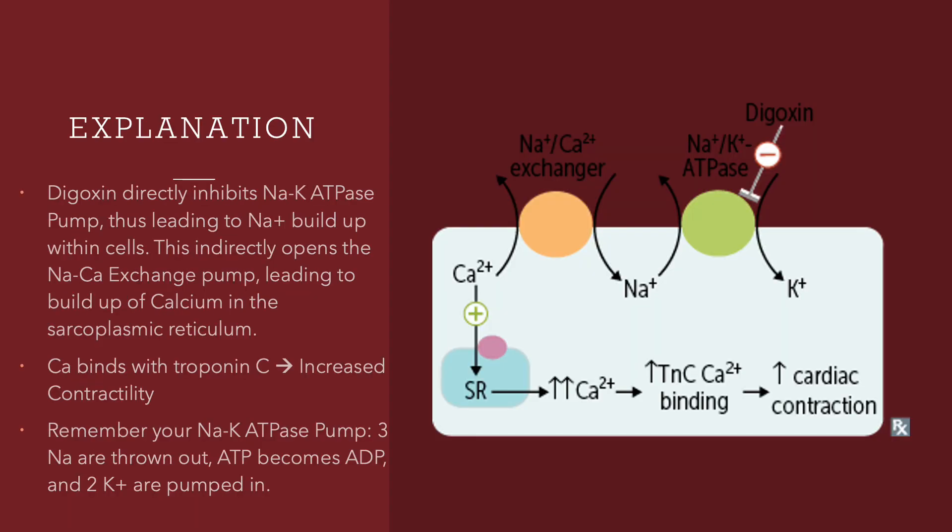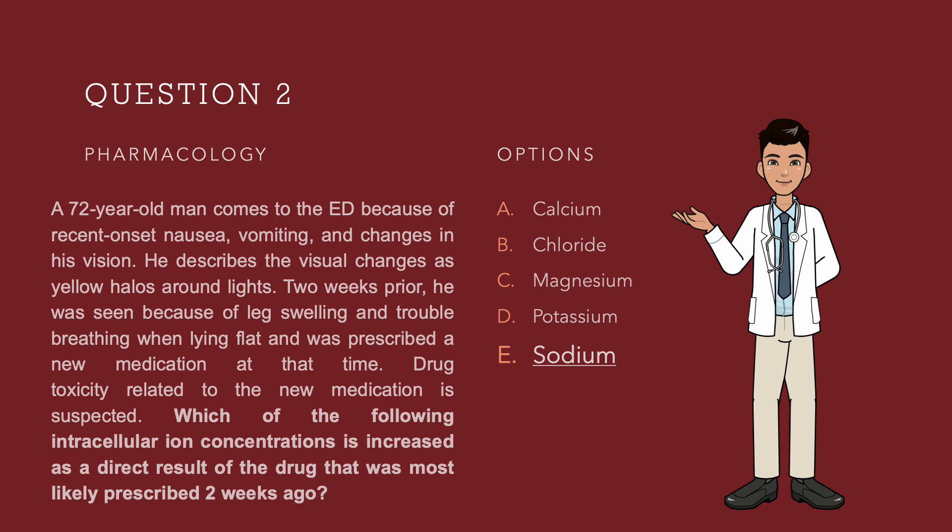But here the question is asking which intracellular ion concentration is increased as a direct result of the drug. Digoxin directly inhibits the sodium-potassium ATPase pump. When this pump is inhibited, sodium is not moving out of the cell — it remains in the cell, and potassium stays out. This leads to indirect sodium-calcium exchanger activation so that sodium can be pushed out and calcium stays in. This calcium binds with troponin C leading to cardiac contractility. So the direct effect of digoxin is sodium retention within the cell. The right answer is option E: sodium.